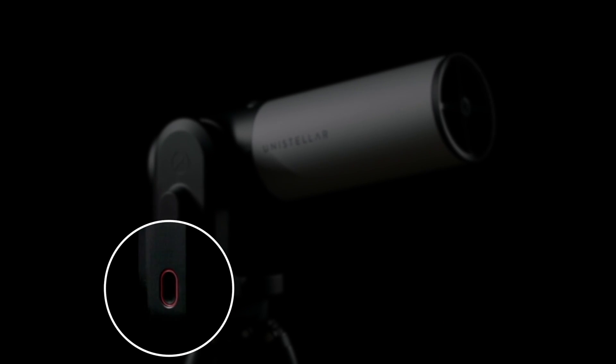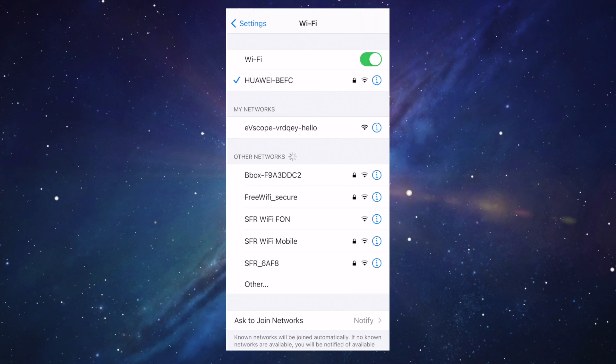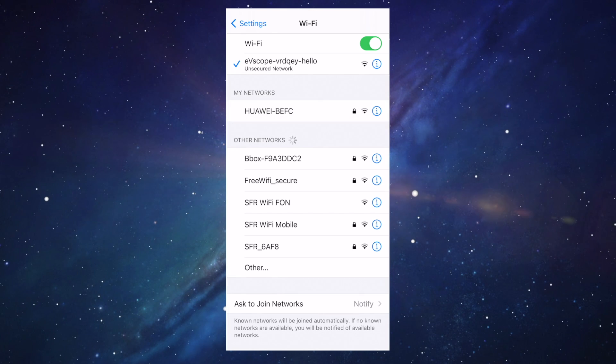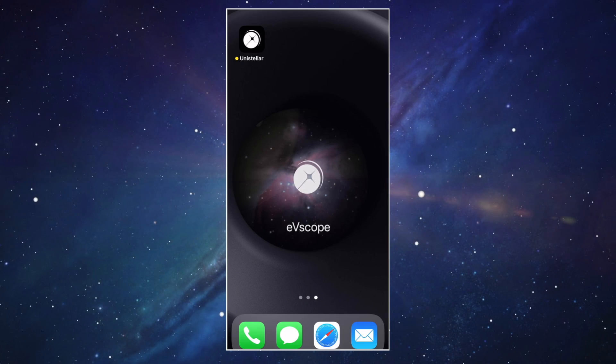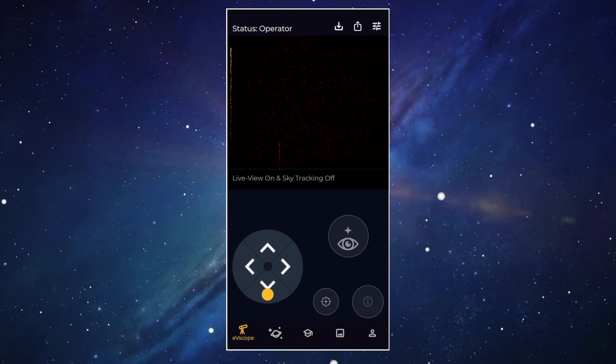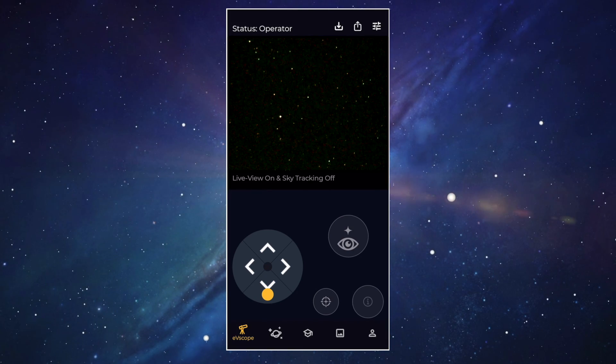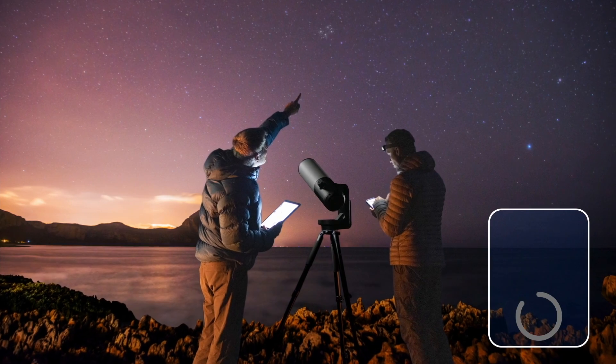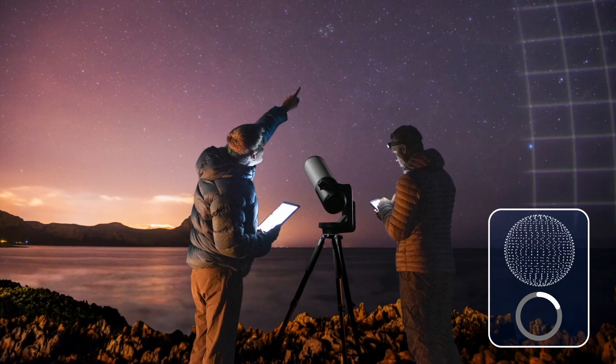Then you turn it on by clicking on the power button here. You connect it to your smartphone via Wi-Fi. Next, you can launch the Unistella app available on iOS and Android. Lower the EVscope with the joystick so that it can see the stars and activate the sky tracking. It will recognize them in 10 seconds and it will know where it is.